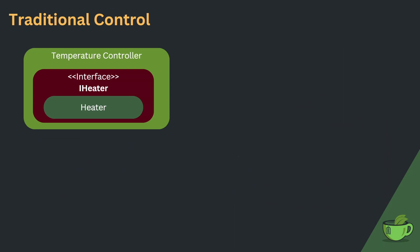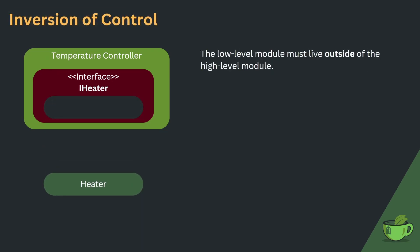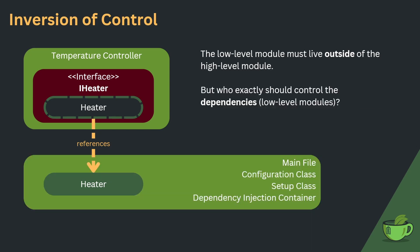We can only solve those problems by inverting both dependency and control. We already inverted the dependency, so let's look at how we can invert control. Our goal is that the heater should live outside of the temperature controller, and the controller then needs to obtain a reference to the heater. The first question is: who should control the heater, if not the temperature controller? If your project is small, construct all dependencies in the main function. For larger projects, consider a configuration or setup class, or use one of the available dependency injection containers.